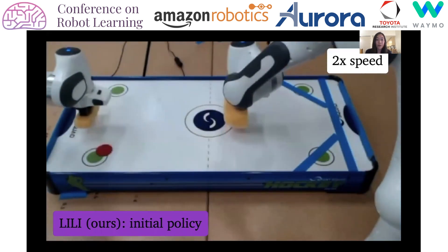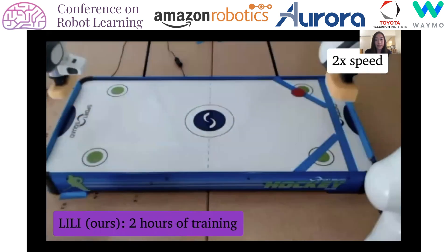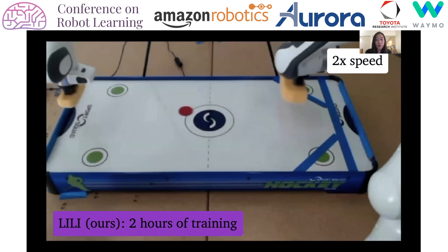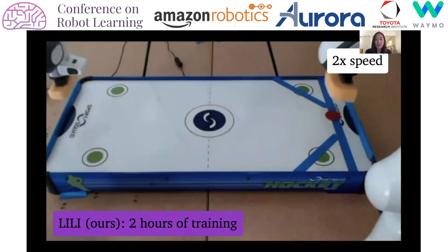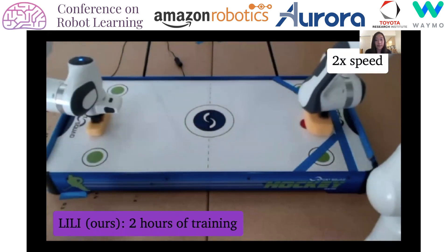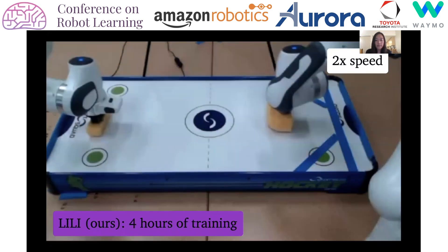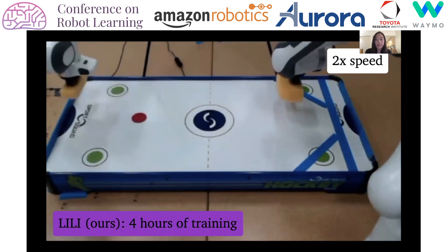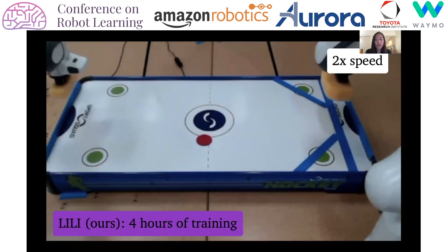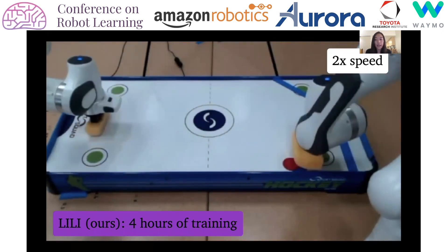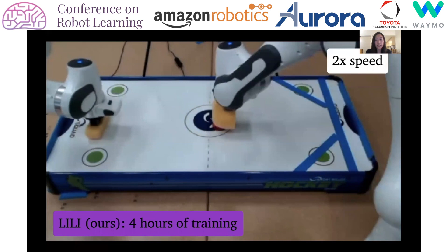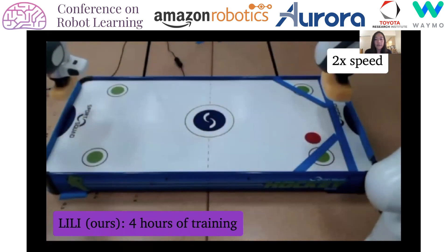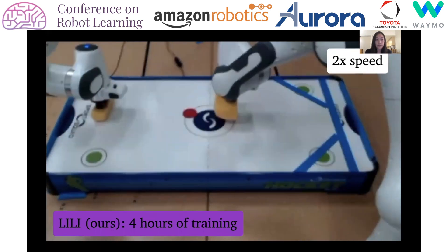Finally, we tested our full approach LILY. Compared to LILY without influence, the full approach learns a little bit slower in the beginning, but it quickly catches up and even influences the other agent to alternate between left and middle shots. By doing so, it achieves higher overall rewards.